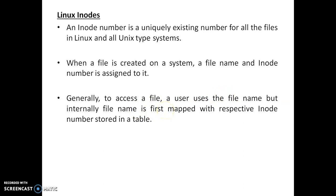The inode number is a uniquely created identification number assigned by the system to the specified file. You only know the name of the file, but internally that name is mapped to this uniquely generated identification number. This number can be viewed with the help of ls -l and also ls -i, where -i stands for inode numbers.